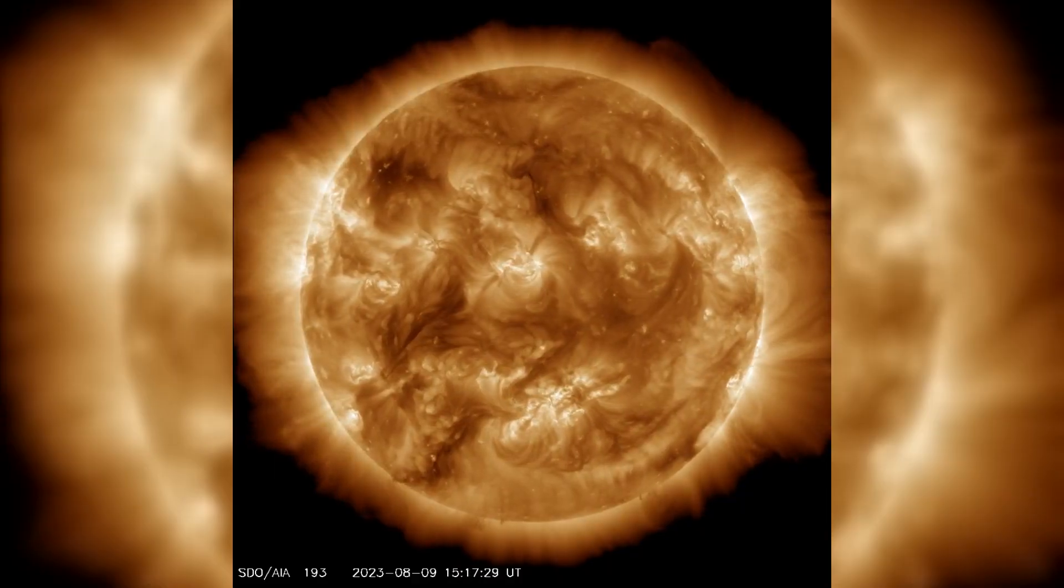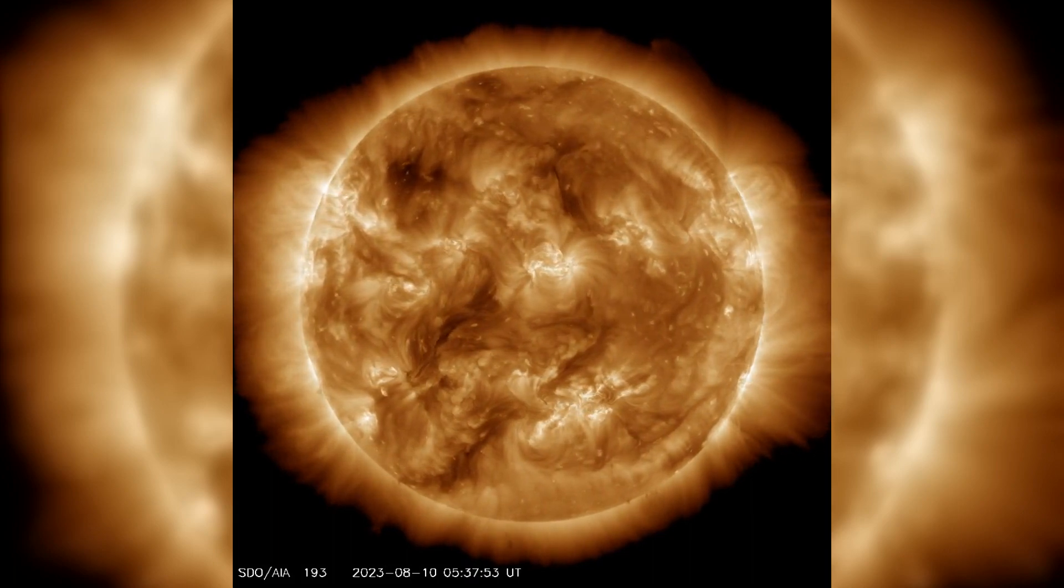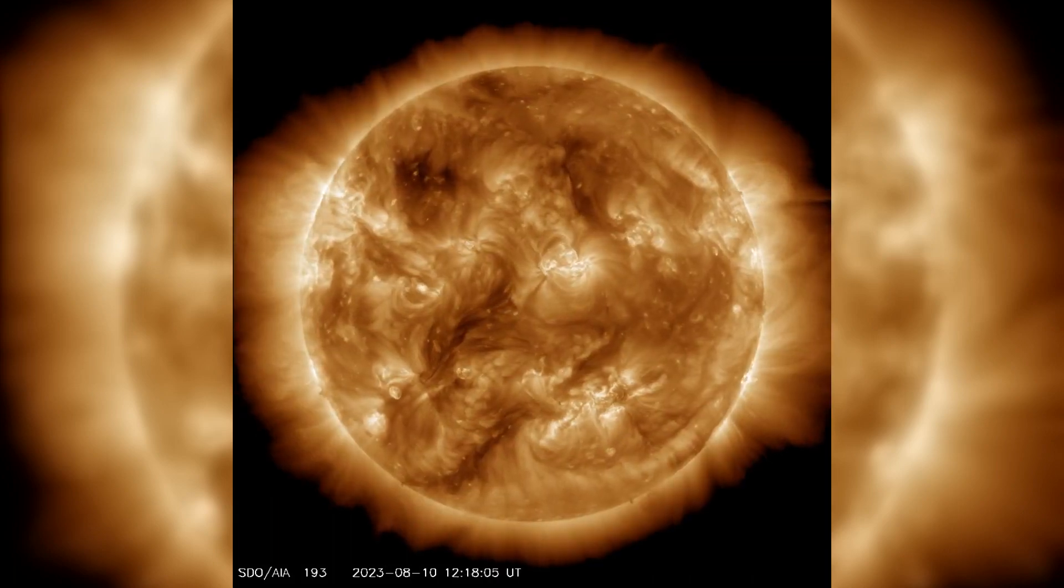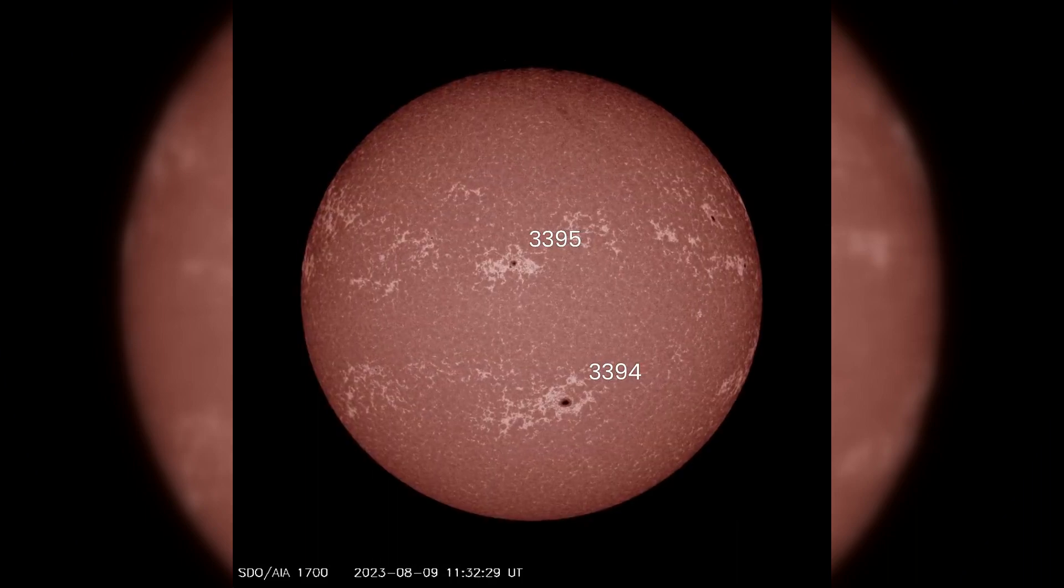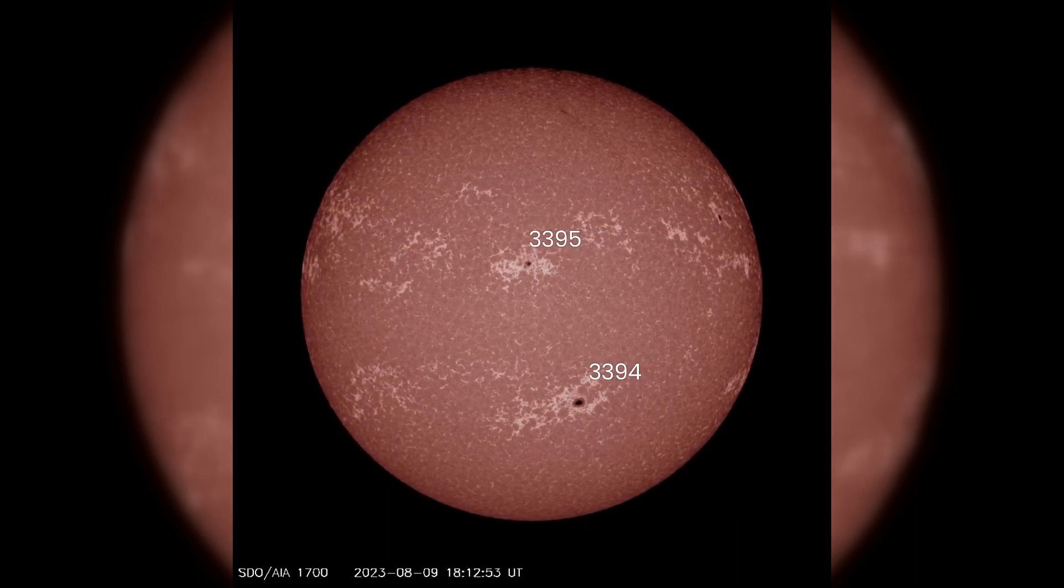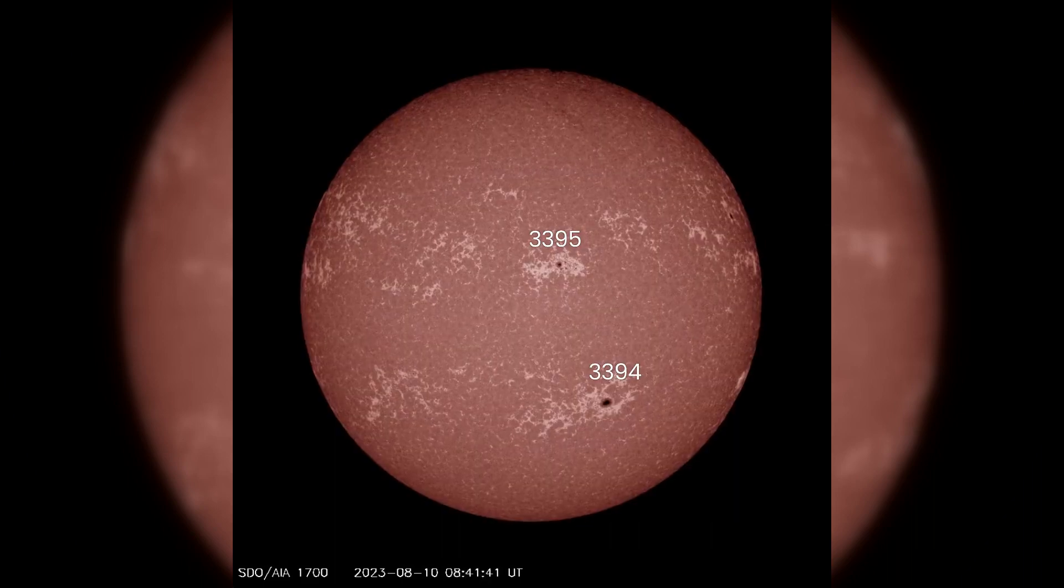In the past 24 hours, solar activity remained at low levels, with minor C-class solar flares recorded. Regions 3394 and 3395 showed slight growth, while two coronal mass ejections were observed.